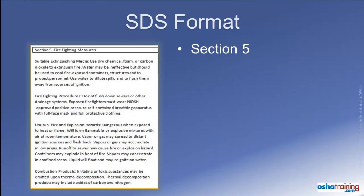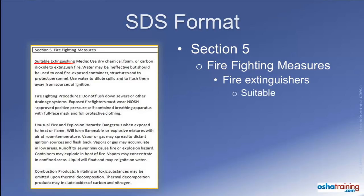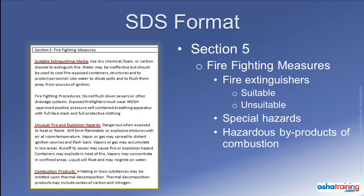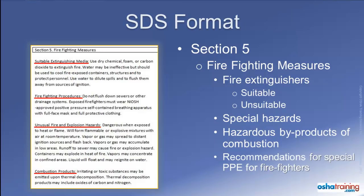Section 5 provides the manufacturer's recommendations for fighting a fire that involves their product. Here you will find a recommendation for the most suitable type of equipment for extinguishing a fire involving the product, as well as information about extinguishers that are not appropriate for use. You will also find details about specific hazards that may develop when the product is involved in a fire, as well as hazardous byproducts that may be generated during combustion. In some cases, you may see recommendations for special protective equipment or precautions to be utilized by fire brigades or firefighters.